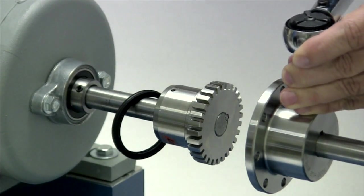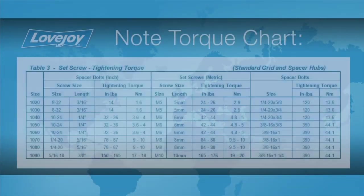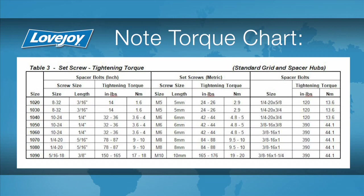The use of a torque wrench is important. If the set screws are not tightened enough, the hub could work loose and slide on the shaft. If the set screws are too tight, they could damage the key, the shaft, or the hub.